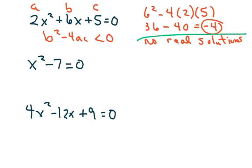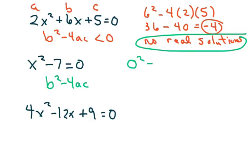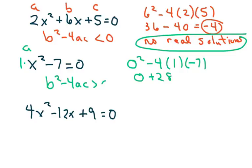On this next one we don't have a b term, so b is 0. We compute b² minus 4ac: 0 squared minus 4 times 1 times negative 7, which gives us 0 plus 28. Since this is positive, we have two real solutions.